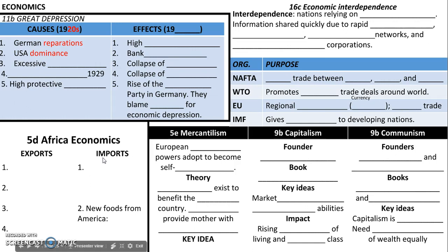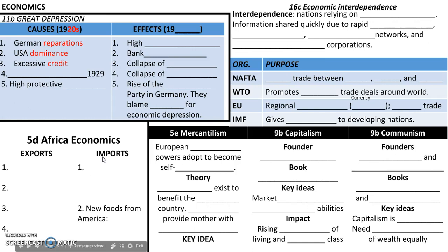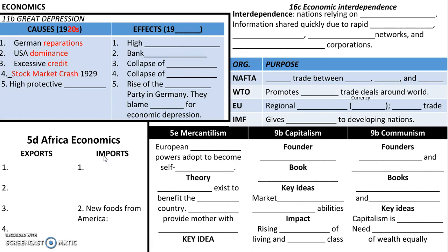Another thing that fueled this dominance was the fact that people were spending money they didn't have. We call this excessive credit — too much credit, too many loans. The United States was just using way too much of this, and eventually that's going to catch up to them. Between Germany's fall and the US rise, stock market prices went up really fast. Eventually people stopped buying, and that happened in 1929 with the stock market crash.